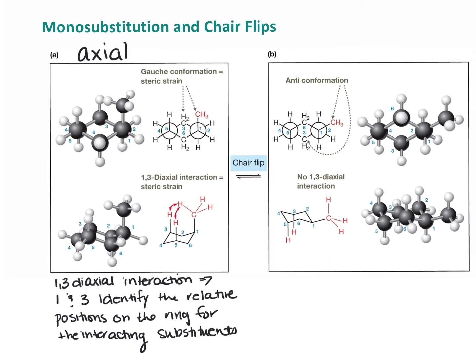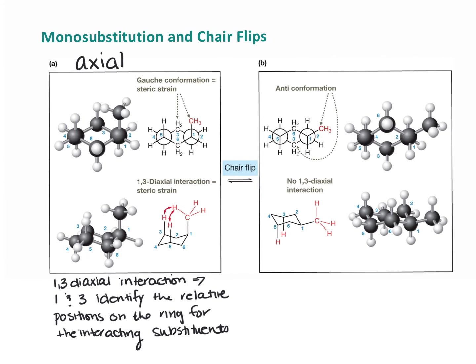No steric strain exists when the CH3 group is in the equatorial position. The CH3 is pointing out into space — it is way far away from these hydrogens here. So there's no steric strain there, and that's what makes it more stable. It's because there's no steric strain.